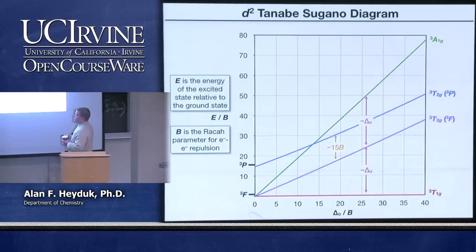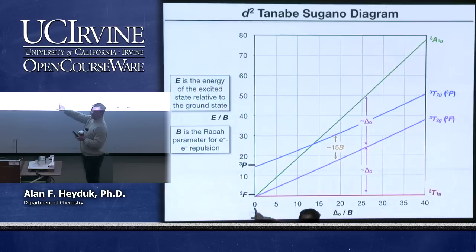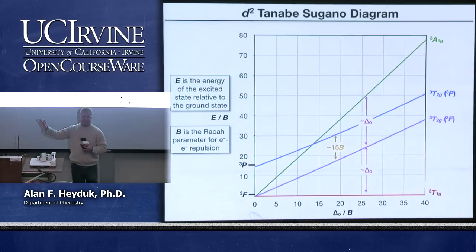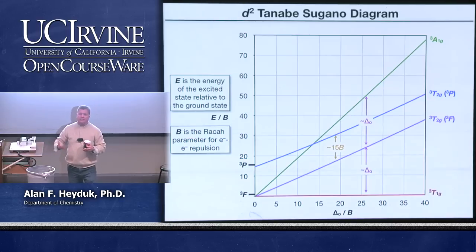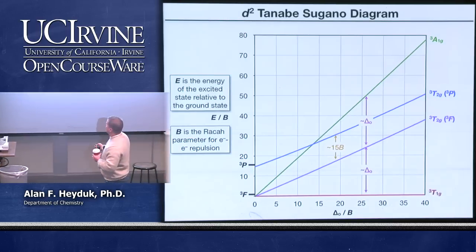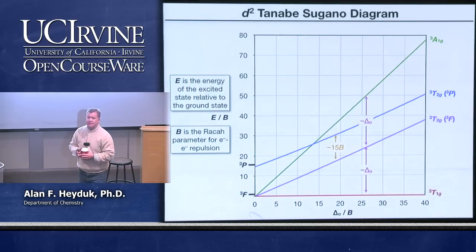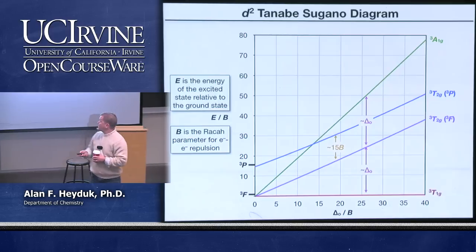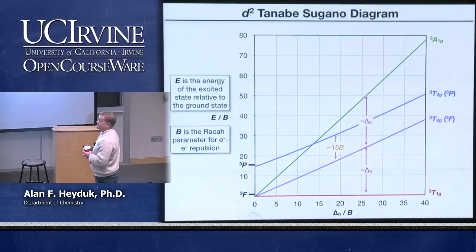If we come along the x-axis to a value of delta O over B equal to zero, that tells you delta O is zero — effectively the free ion with no octahedral ligand field. At zero, we put the triplet F as the ground state and the triplet P as the excited state. That separation between the triplet F and the triplet P is exactly 15B.